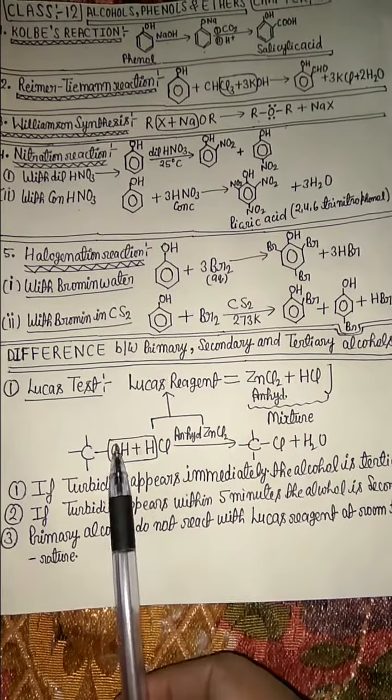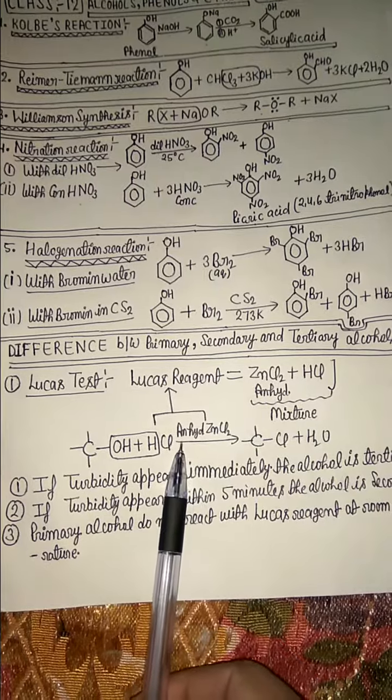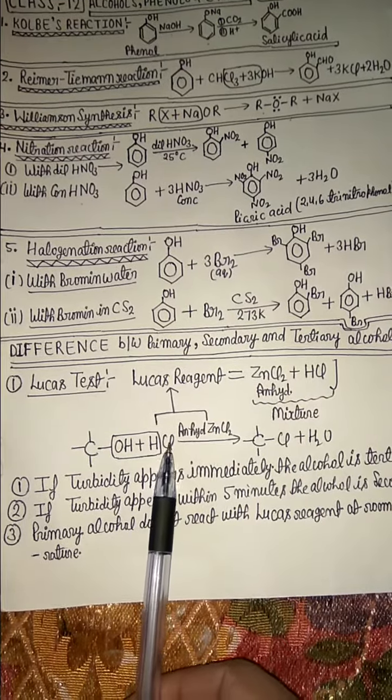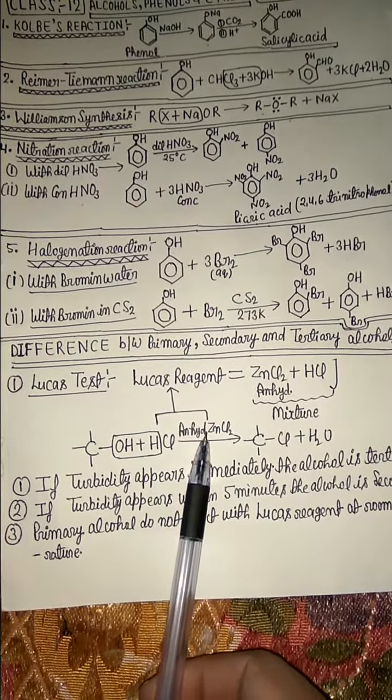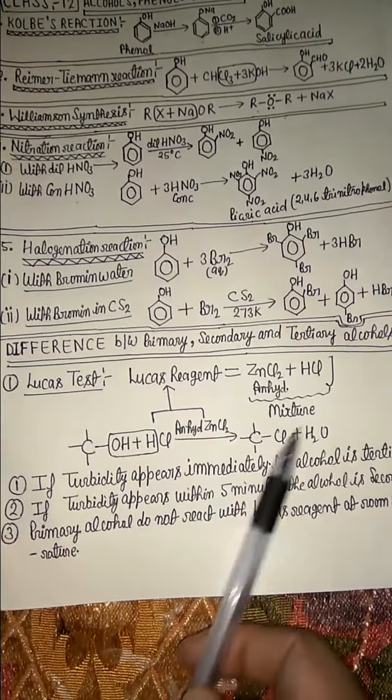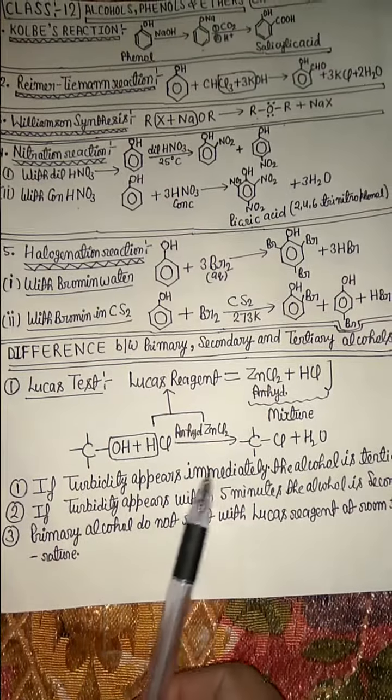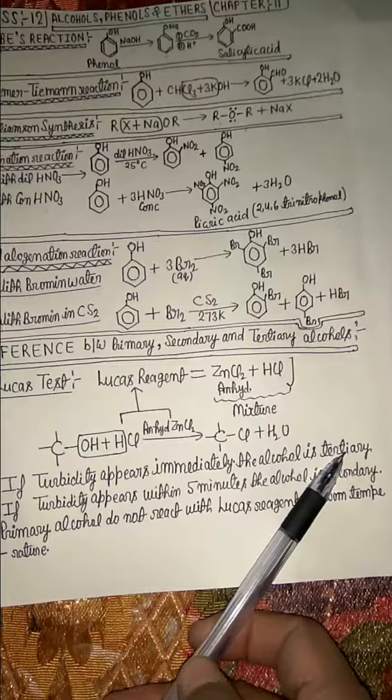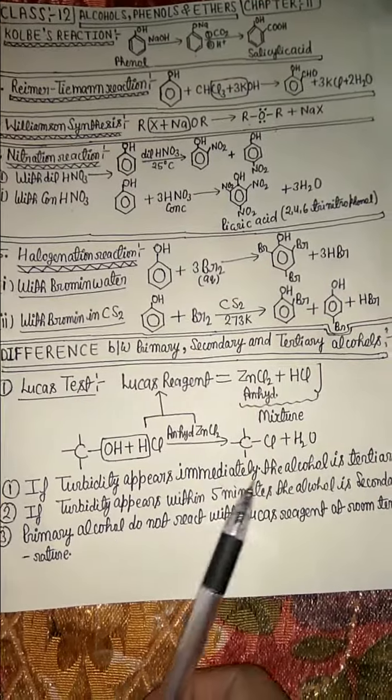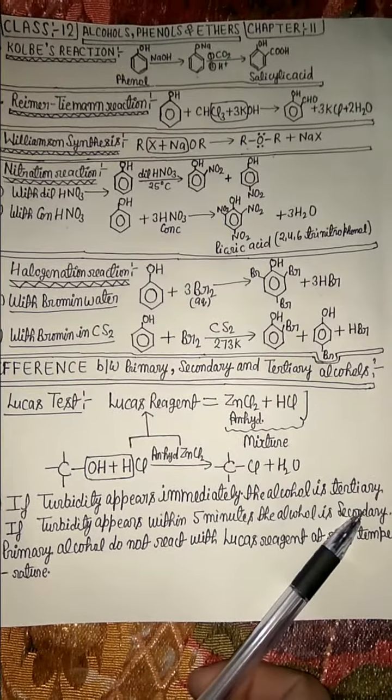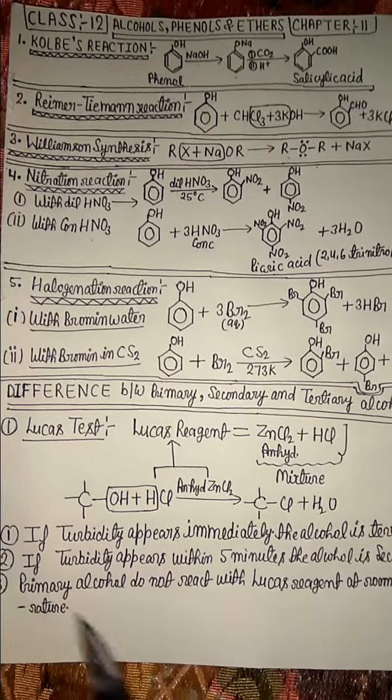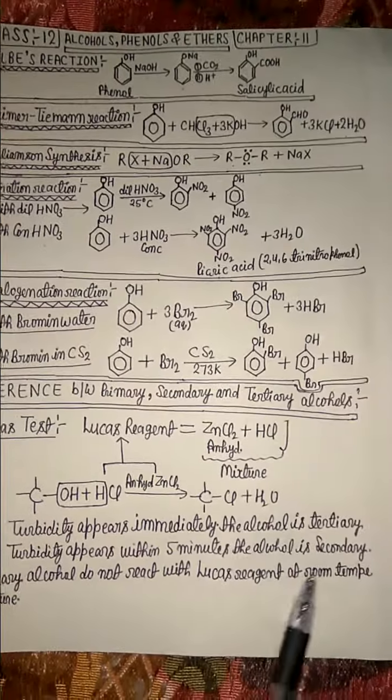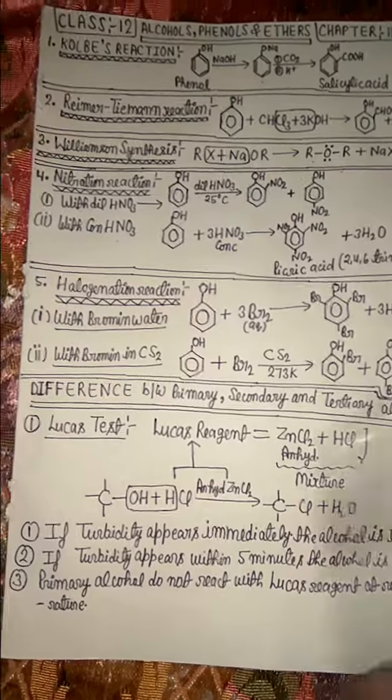Primary alcohol reacts with Lucas Reagent - that means Hydrochloric Acid and Anhydrous Zinc Chloride - to form Alkyl Chloride. If turbidity appears immediately, the alcohol is Tertiary. If turbidity appears within 5 minutes, the alcohol is Secondary. Primary Alcohol does not react with Lucas Reagent at room temperature.